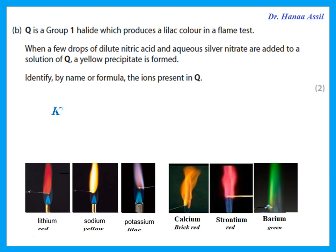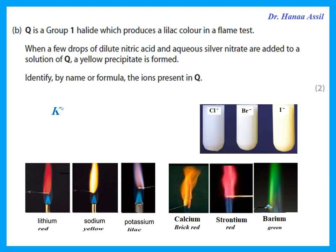When a few drops of dilute nitric acid and silver nitrate are added to the solution, a yellow precipitate is formed. You know that nitric acid and silver nitrate is a test for halides — chloride, bromide, iodide. With chloride it gives a white precipitate, bromide gives cream, and a yellow precipitate is produced with iodide. So that means I have iodide ion, and Q is potassium iodide.